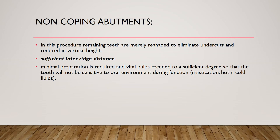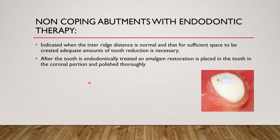Coming to non-coping abutments: in this procedure, remaining teeth are merely reshaped to eliminate undercuts and reduce vertical height. These are not endodontically treated. The vertical height is minimally reduced to maintain the overall arch distance, the pulp remains vital, and the tooth is reduced only enough not to expose the pulp. In practice, non-coping abutments with endodontic treatment are more successful.